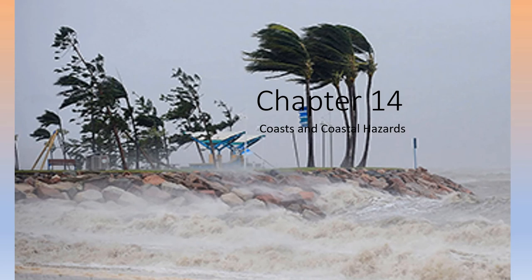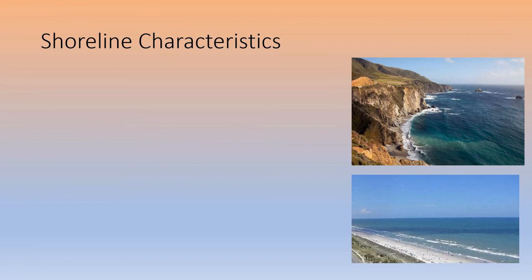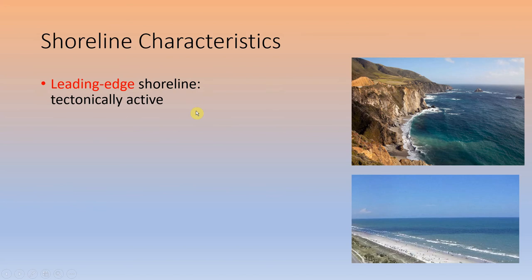Chapter 14 is about coasts and coastal hazards. In this edition of the book they lumped coasts and glaciers together, but I'm going to treat those separately. Here are a couple of different shoreline characteristics — our Pacific coast by California and our Atlantic seaboard represent two different types of shorelines. This one would be a leading-edge shoreline, a tectonically active shoreline, with the plate boundary right along the edge of California.